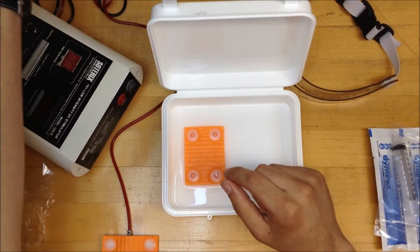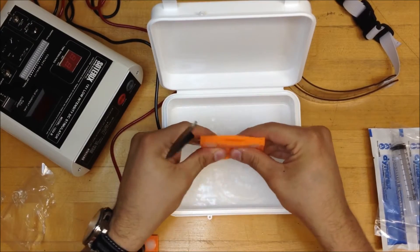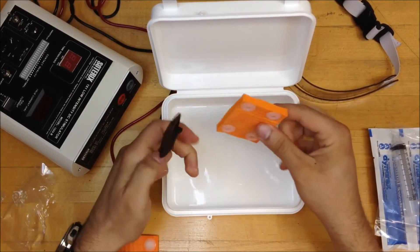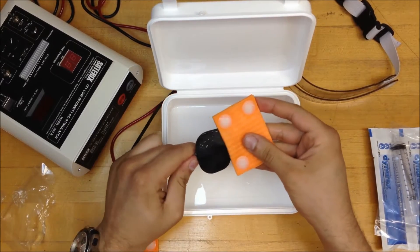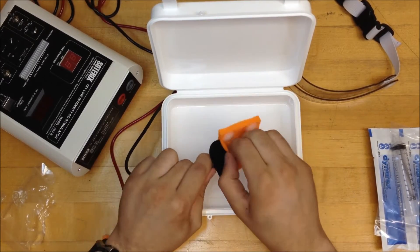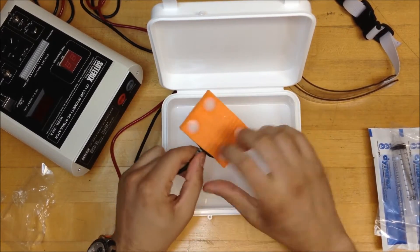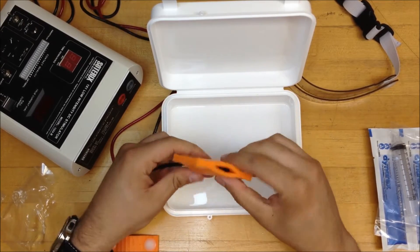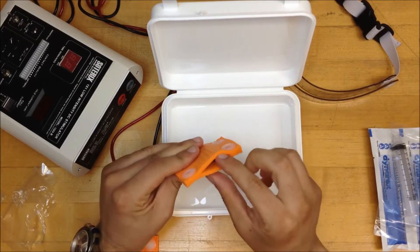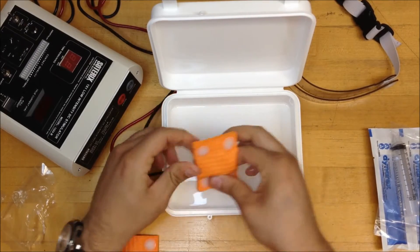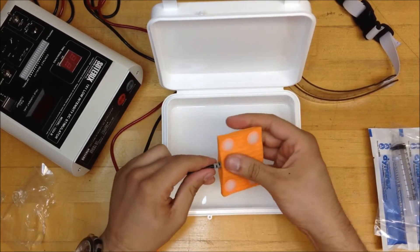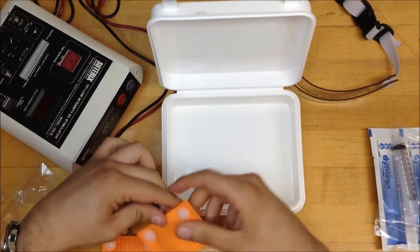Now we take the cathode. Same thing. Take the excess fluid out. And we put the carbon electrode. Make sure it's inserted properly. Like that. Now it's good.